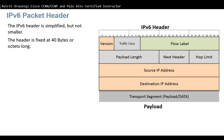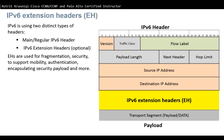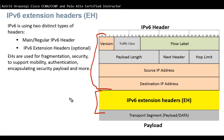The IPv6 header is simplified compared to IPv4 but it is not smaller — it is always 40 bytes. There are two distinct types of headers in IPv6: the main regular header, and an optional extension header. The extension header can be used for fragmentation, security, mobility, authentication, ESP, and more.